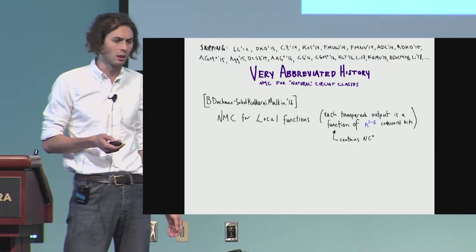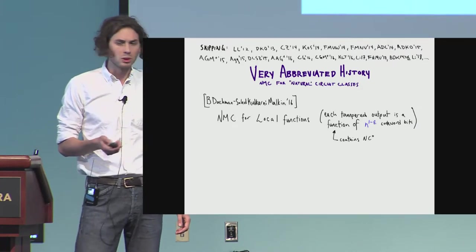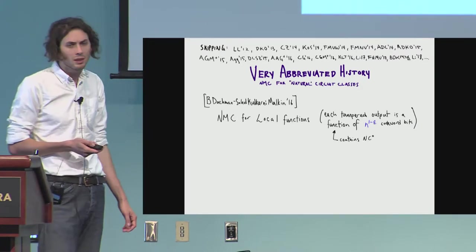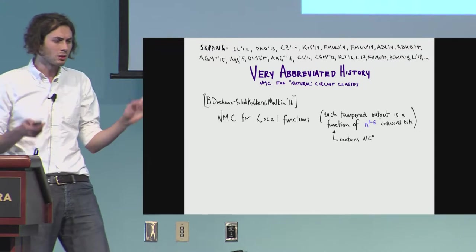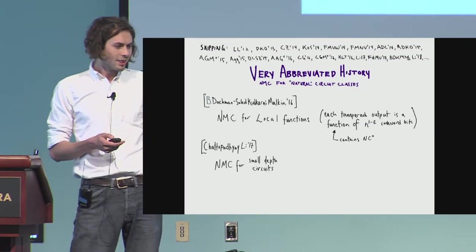Epsilon is anything between zero and one, any constant. And this contains NC zero. If you don't know what that is, great, it's fine.